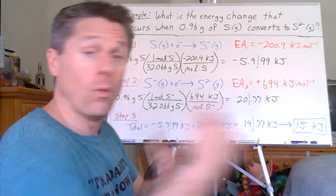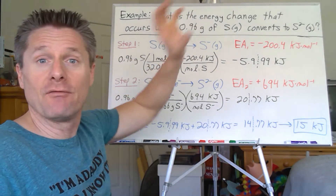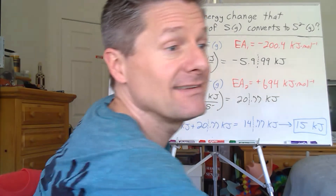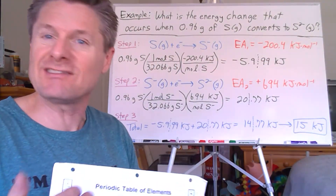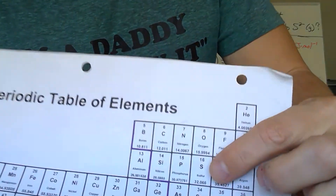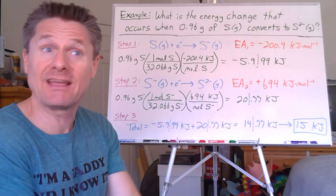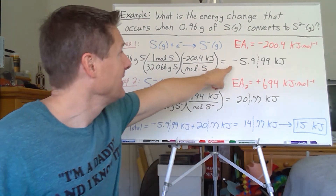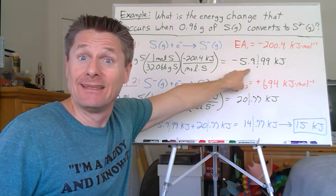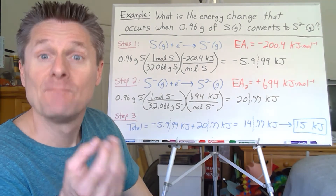So let's calculate the energy change in taking 0.96 grams of neutral sulfur to S minus in the gas phase. Take the mass, convert that to moles, because the energy is in kilojoules per mole. It's exactly the same as the ionization energy problem — just the EA values are different. Sulfur is 32.066 grams per mole. And it's negative 200.4 kilojoules per mole released because it's going to a lower energy state. We've got two significant digits — to two significant digits, the energy would be negative 5.999 kilojoules, which rounds to negative 6.0 kilojoules.